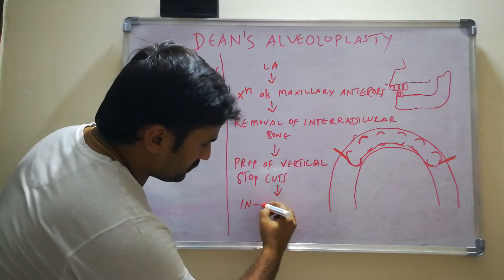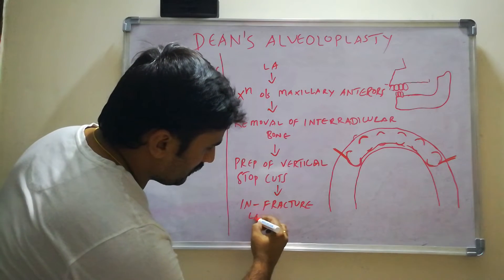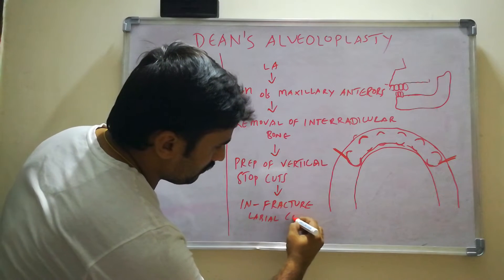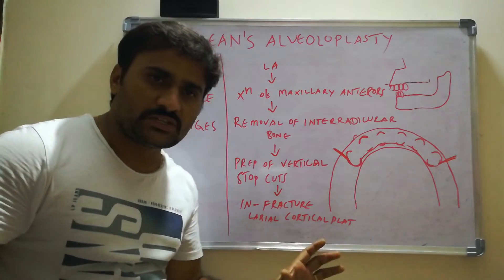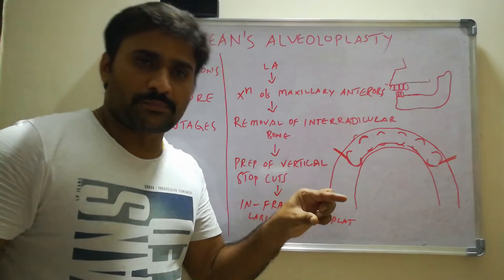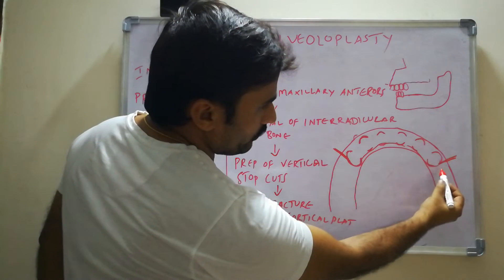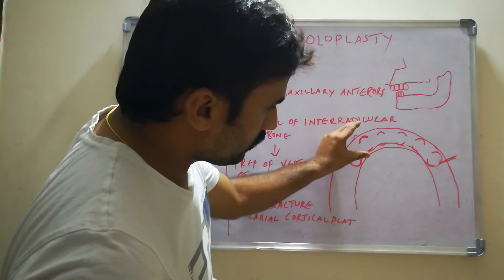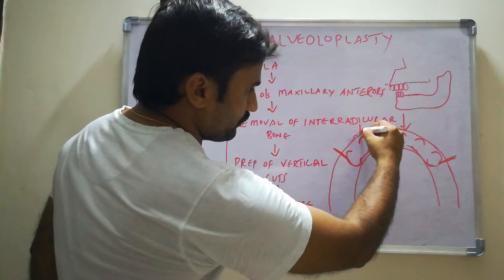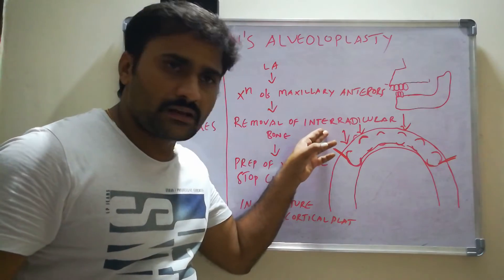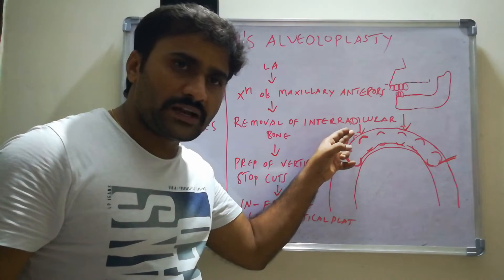The next step is infracture of the labial cortical plate. You will apply finger pressure on the labial cortical plate from outside, holding the alveolar process and applying pressure toward the palatal direction, so the labial cortical plate gets infractured.